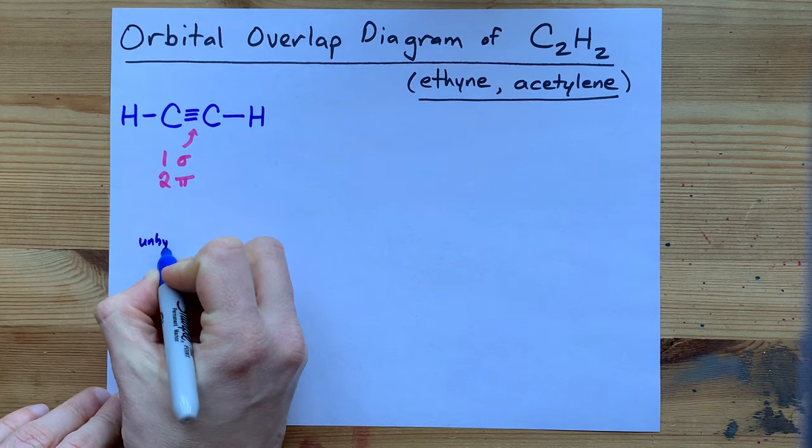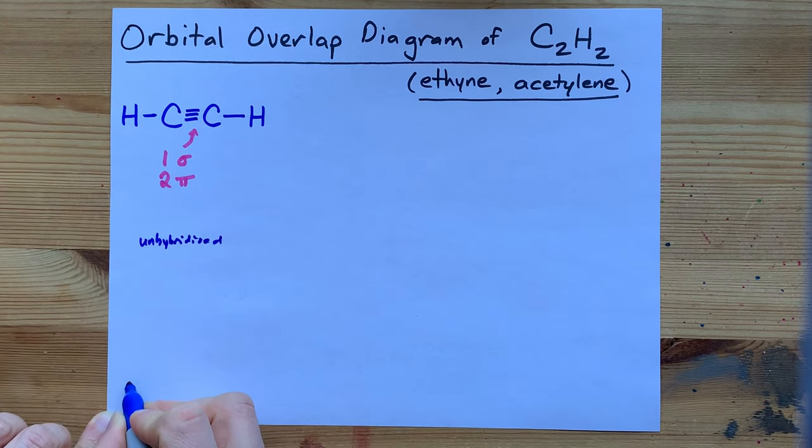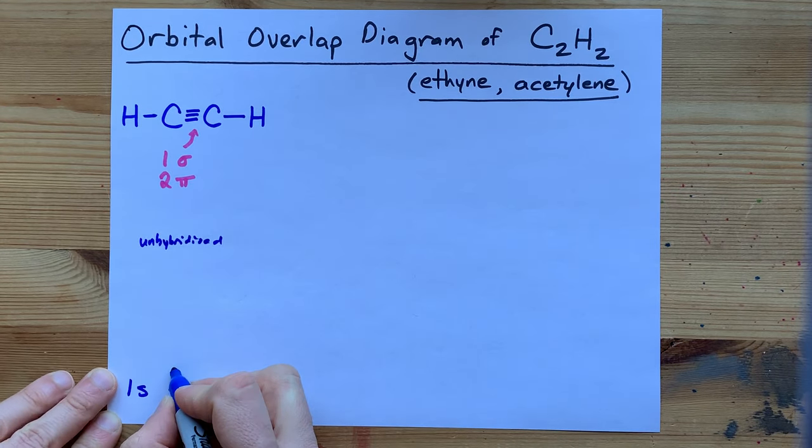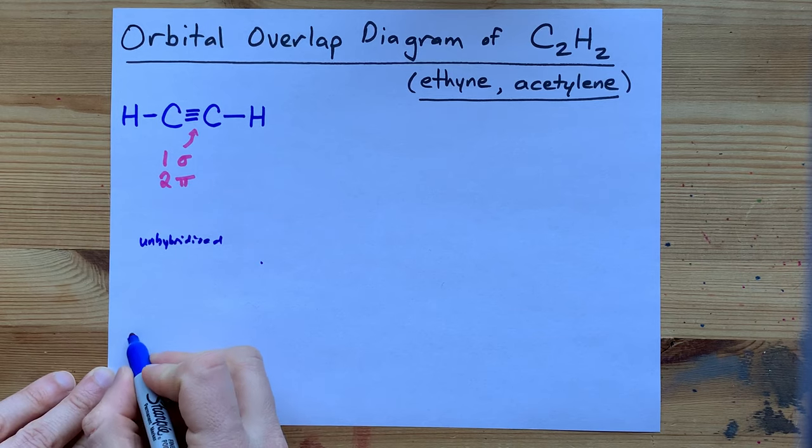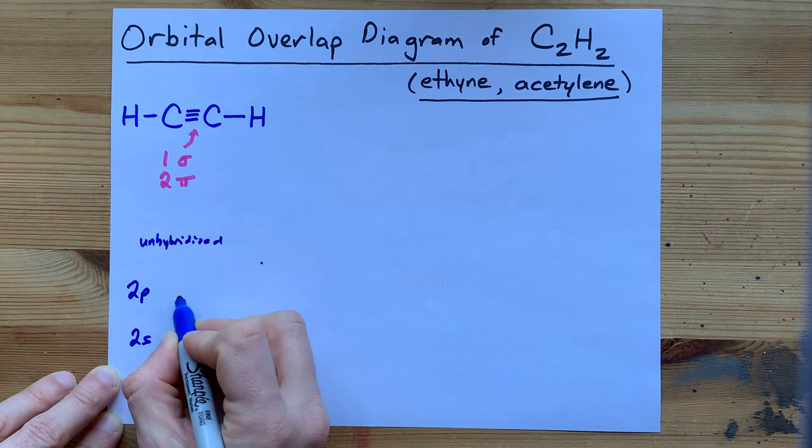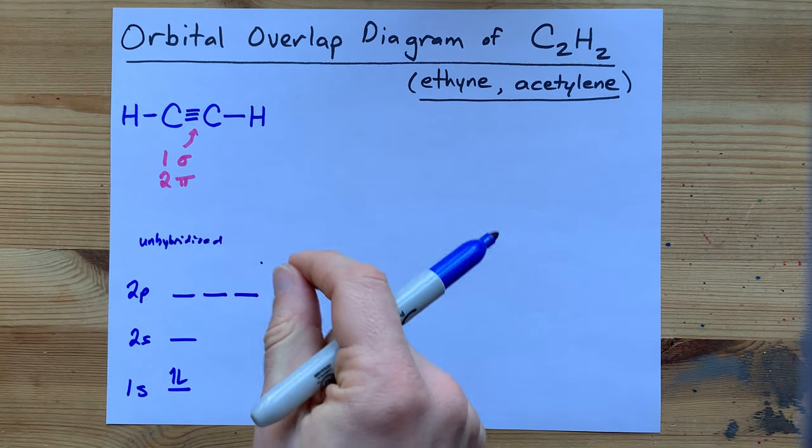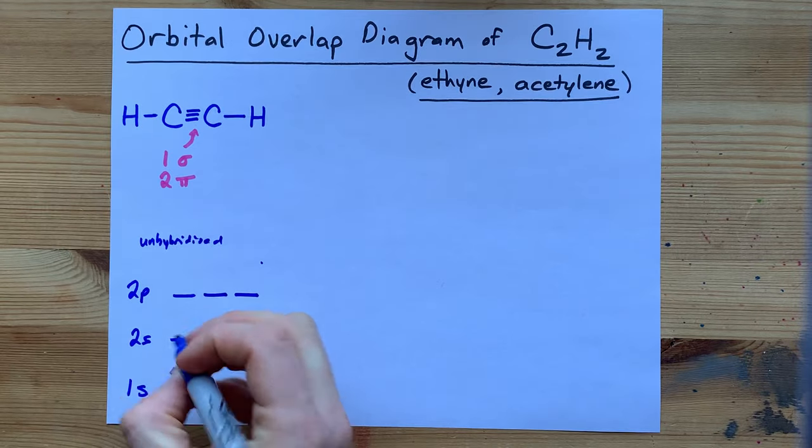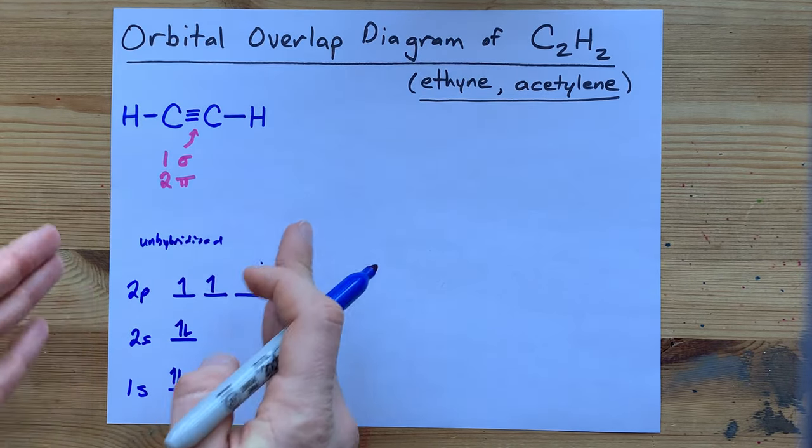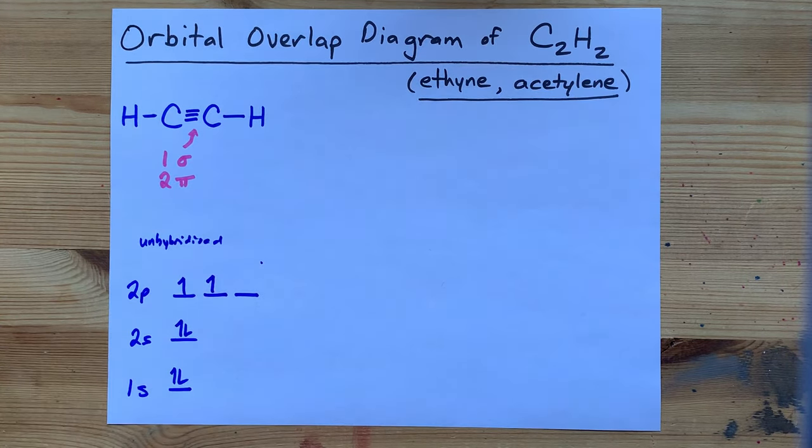Let me draw you the unhybridized electron configuration for carbon. I'll even include the 1s orbital here, which is not involved in bonding. Carbon also has a 2s and some 2p orbitals, but then carbon only has 4 electrons in its valence shell. So you go 1, 2, 3, 4. This is the unhybridized version of a carbon atom in terms of an electron configuration.